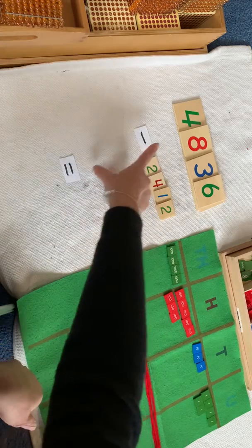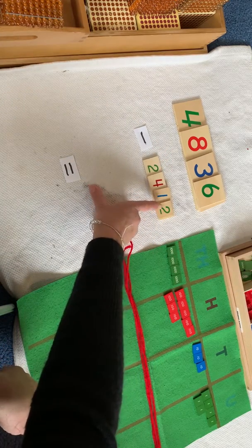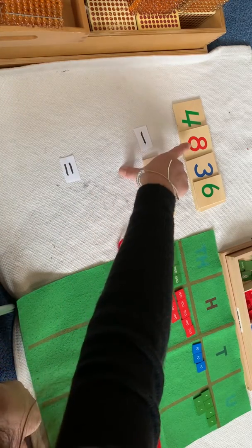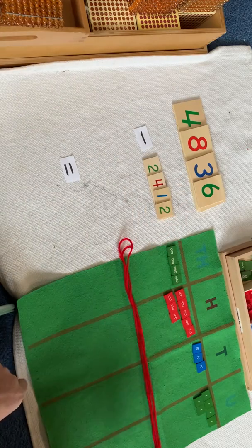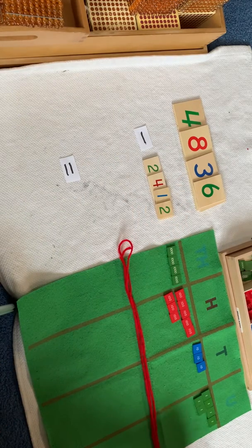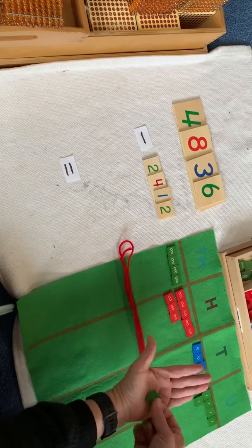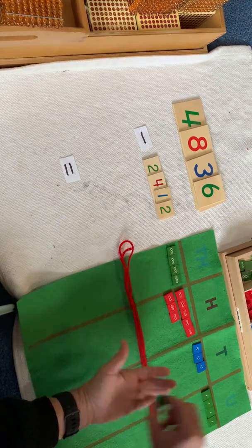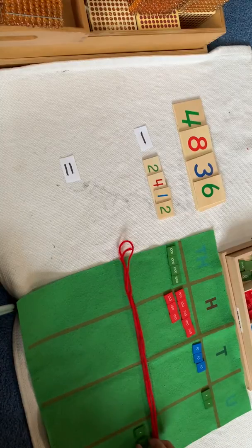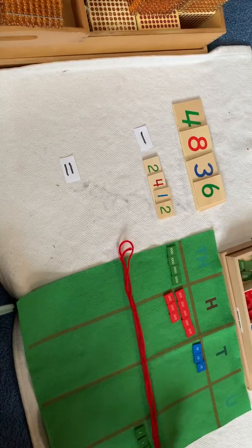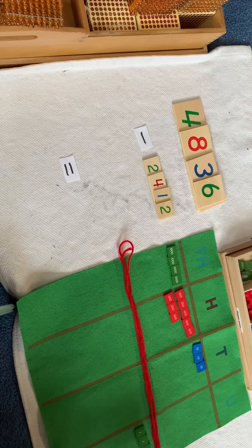So we're going to take away 2,412 from 4,836. Always we begin in the units. So I need to take away 2. Take away 1, take away 2. What is left is 4. We have 4 left.